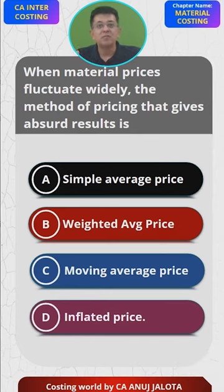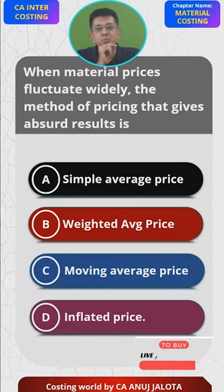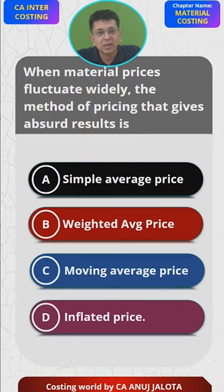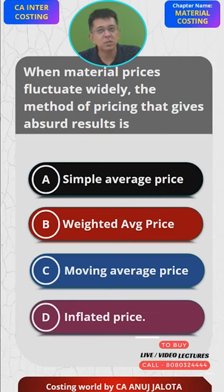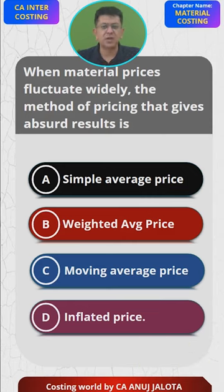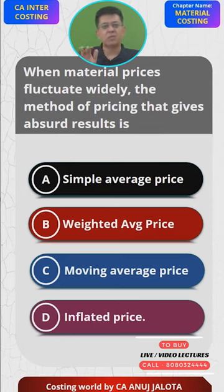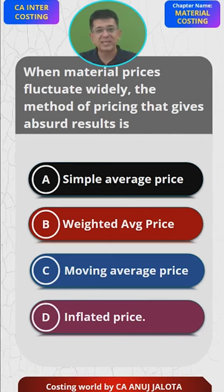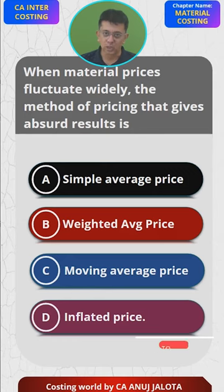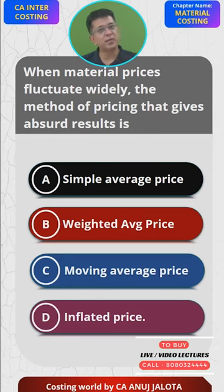Obviously ₹150 is not even the real price — it is just a simple average of the rates without considering the quantity. So if you take ₹150, absolutely useless results will come out. Simple average is the worst method you can use. Simple average should only be used where prices do not fluctuate much. In case prices fluctuate a lot, weighted average is always better — it tallies as well. Under simple average, things will not tally, so in the end you will have to take something as a balancing figure.